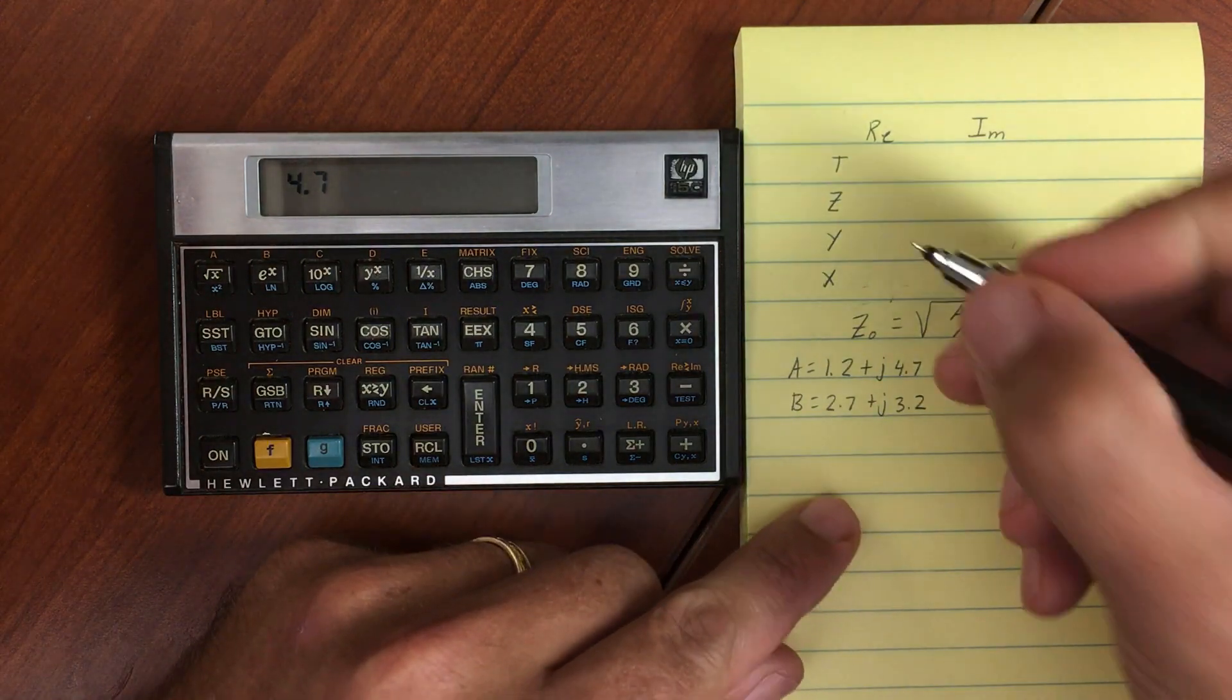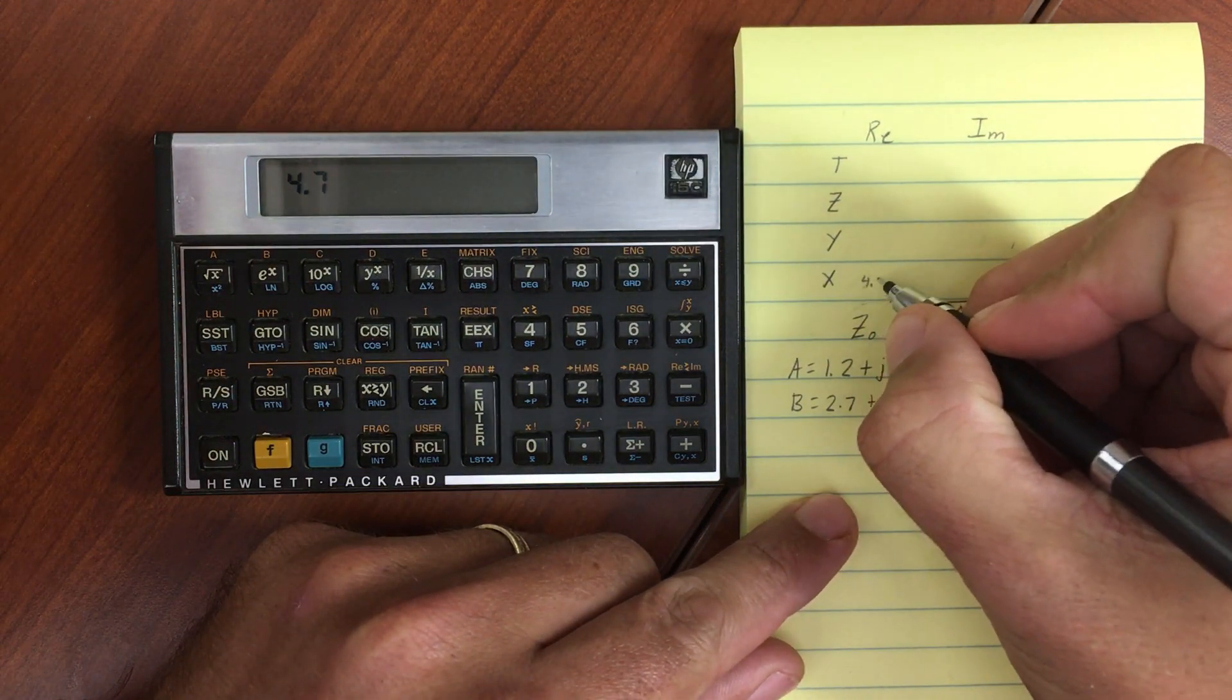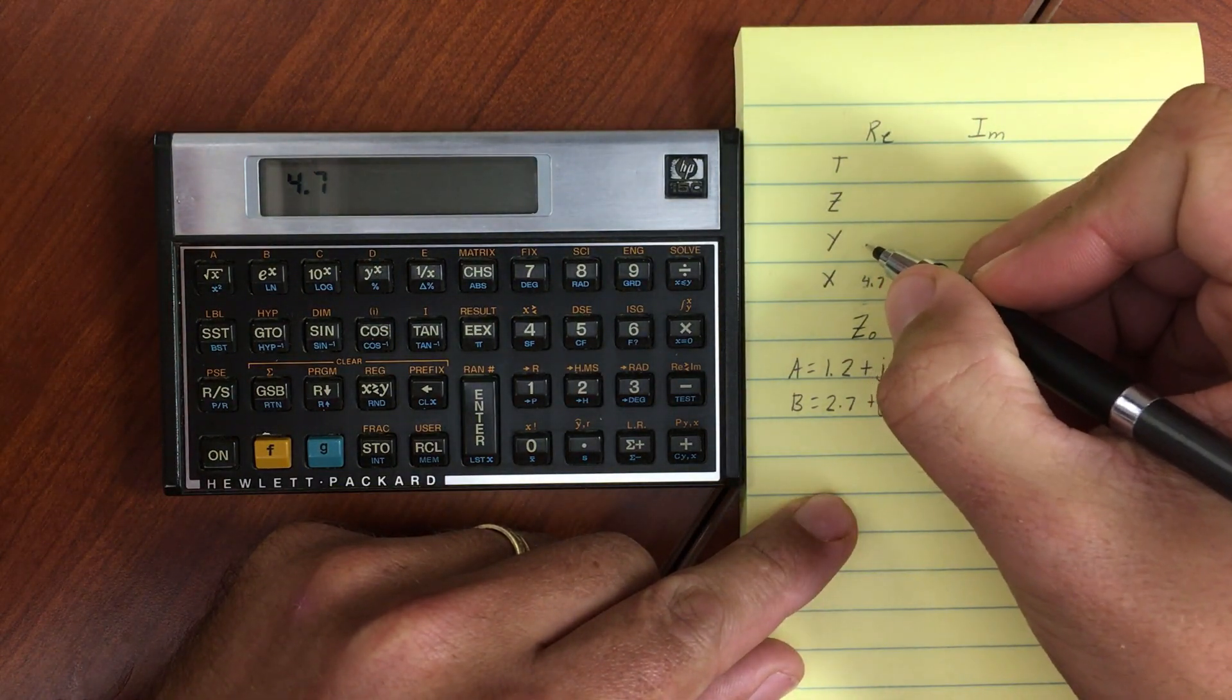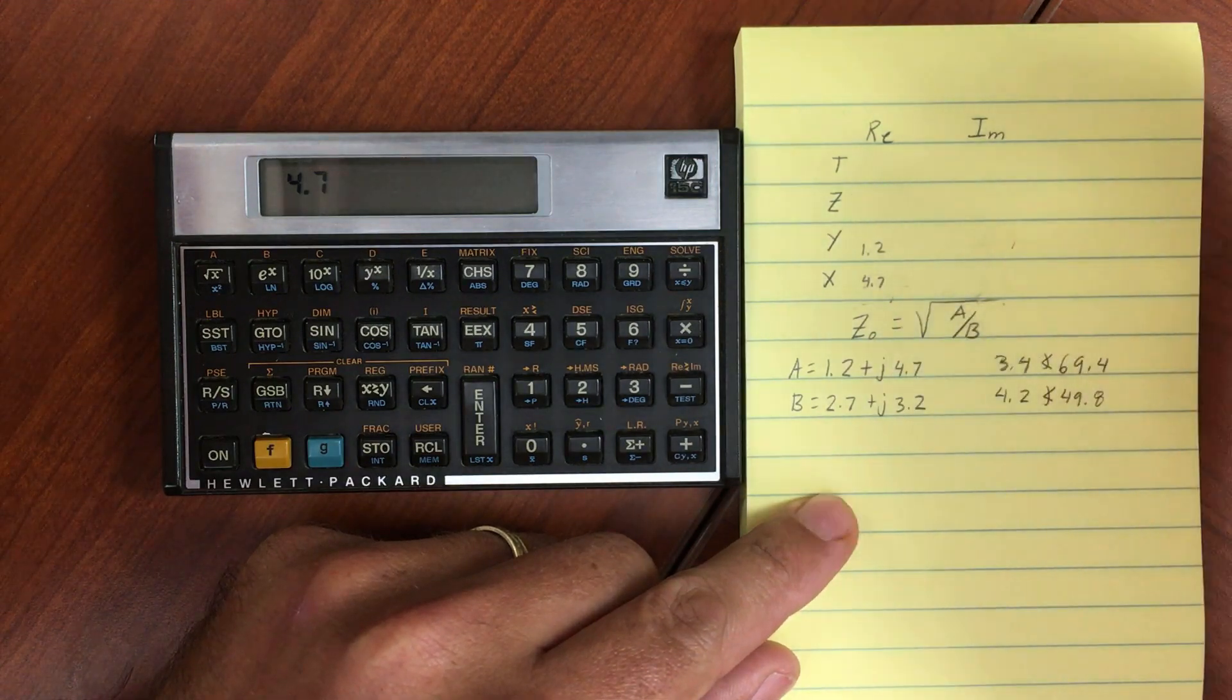So right now, in my stack, I have 4.7 in the X portion, and I have 1.2 in the Y portion.